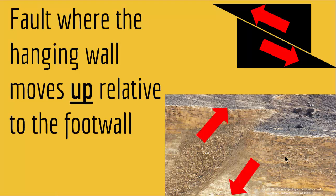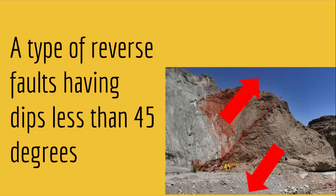The last type of dip slip fault is called a thrust fault. A thrust fault is a type of reverse fault having dips less than 45 degrees. So thrust faults are reverse faults, but the angle of the fault surface is less than 45 degrees. As you see here, this is the fault line, this side went up, this side went down — just like a reverse fault but with a shallower angle.